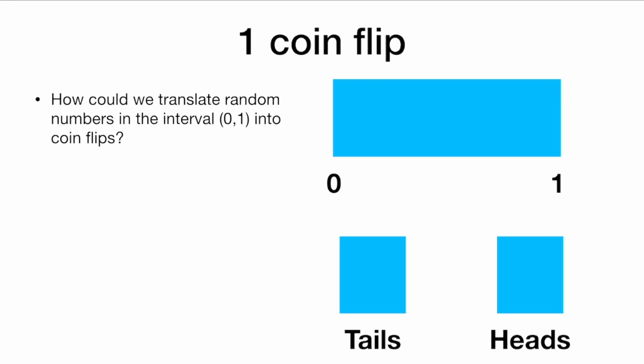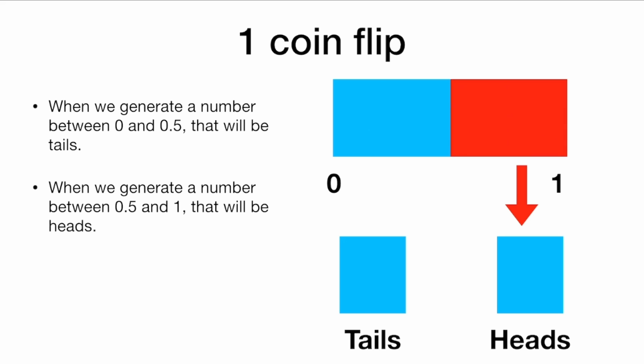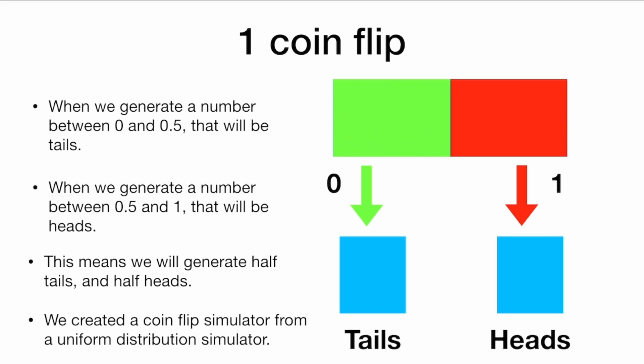How could we translate random numbers in the interval 0, 1 into coin flips? When we generate a number between 0 and 0.5, we could call that tails. And when we generate a number between 0.5 and 1, that would be heads. This means that we will generate half tails and half heads. So we just created a coin flip simulator from a uniform distribution simulator.